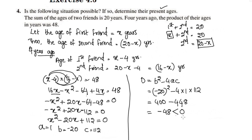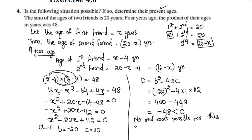When b squared minus 4ac is greater than 0, we have two real roots. When equal to 0, we have two equal roots. When less than 0, there are no real roots. Since the discriminant is less than 0, no real roots are possible for this equation. Hence, this situation is not possible.